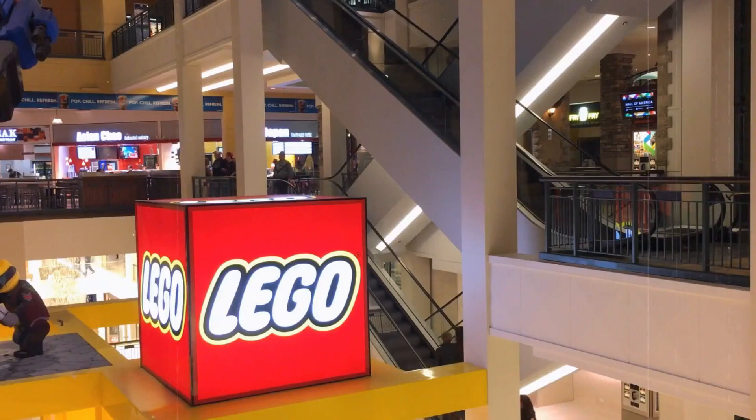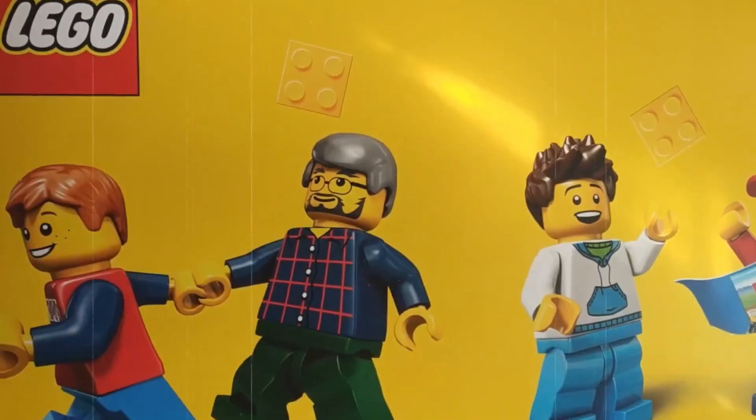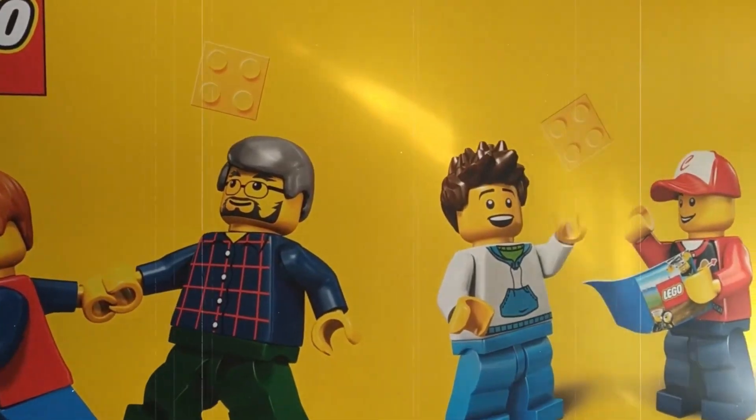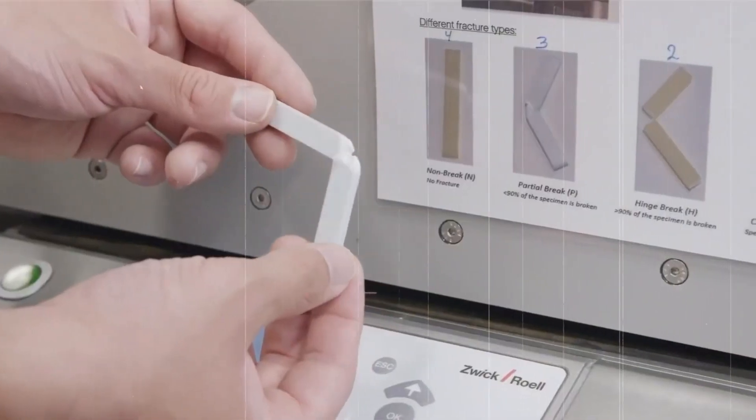The boxes are sealed and labeled, ready to be shipped to stores around the world. The packaging process is designed to protect the bricks during transit and ensure they arrive at their destination in perfect condition. Each package is also checked to ensure it contains the correct number of bricks and components for the set.